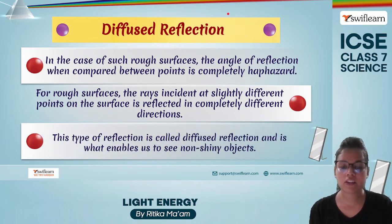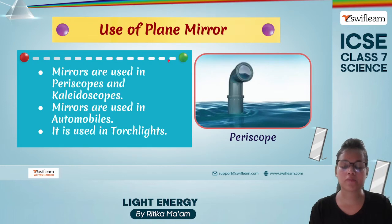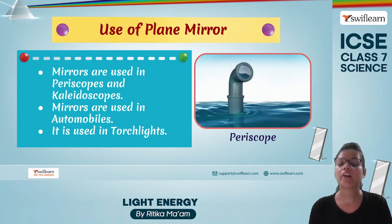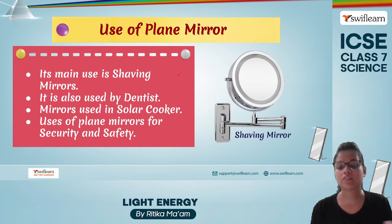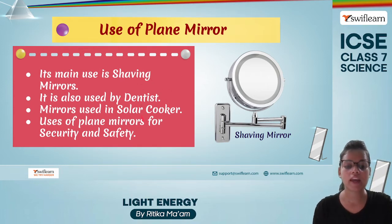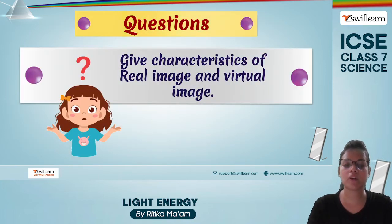This type of reflection is known as diffuse reflection, which enables us to see non-shiny objects. Talking about the uses of plane mirrors: a very common use is in automobile torchlights. They are also used in periscopes or kaleidoscopes, as shaving mirrors, or by dentists. Mirrors are also used in solar cookers, where they take in light, reflect it, and that is how food is cooked. They are also used for security and safety.